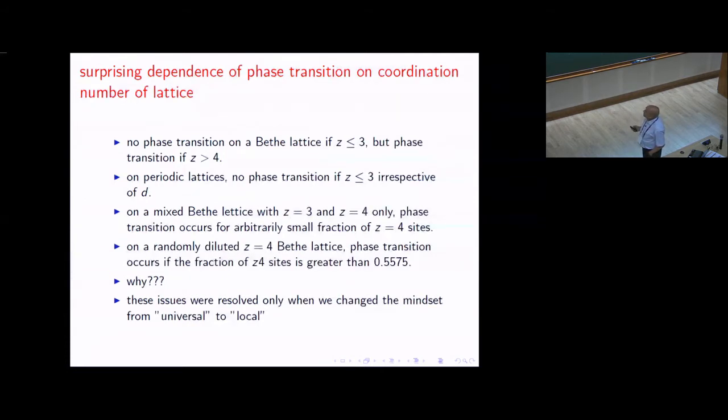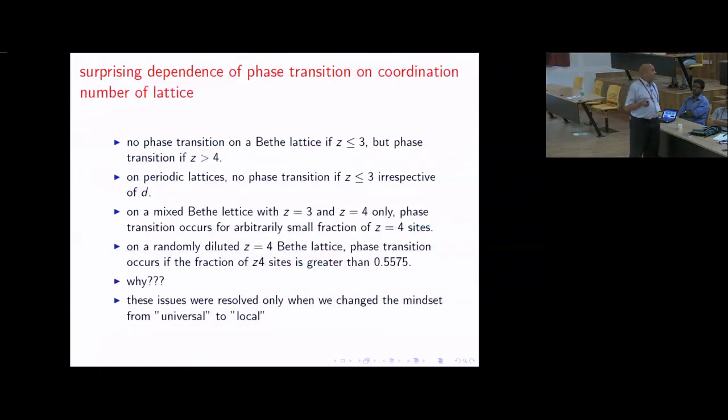The first surprising thing is that no phase transition takes place if the coordination number of Bethe lattice is less than three. On periodic lattices also, no phase transition takes place if the coordination number is less than three irrespective of dimensionality of space in which the lattice is embedded. One can artificially create lattices—Sanjeev here has done this work for his thesis—you can create lattices which have coordination number three but the dimensionality of space can be three or four or five, and you find that there is no jump in magnetization, no critical point.